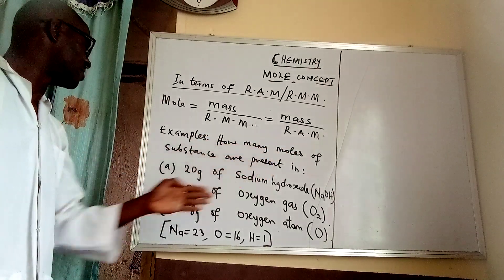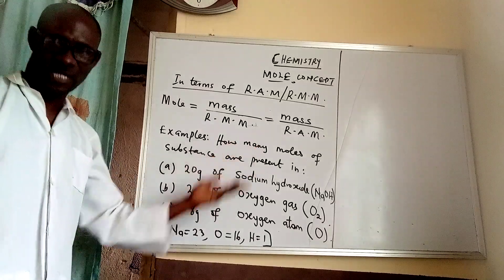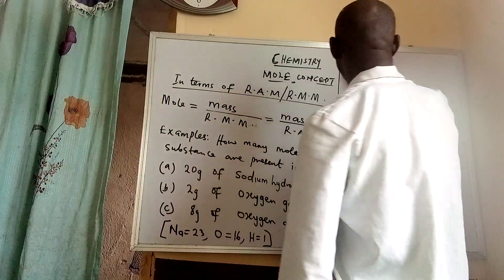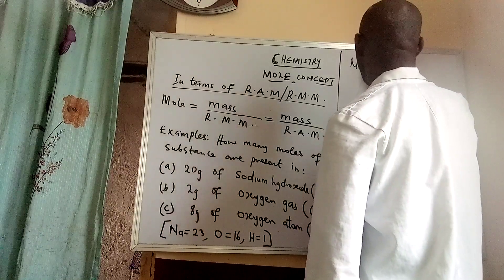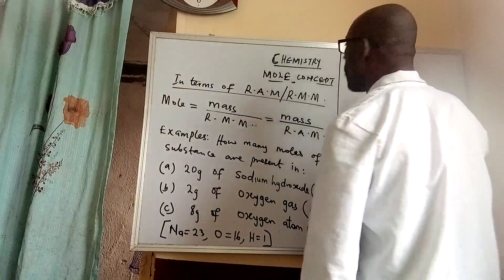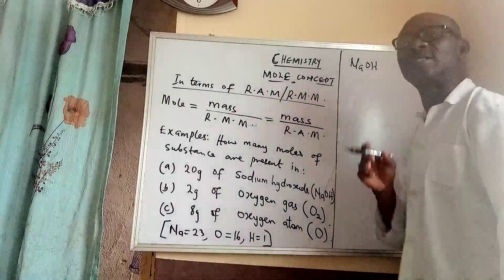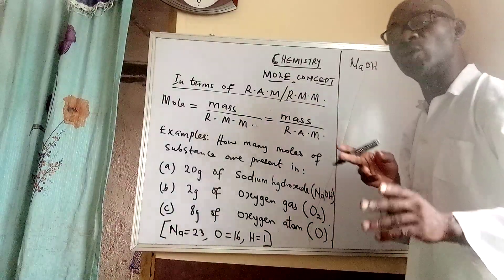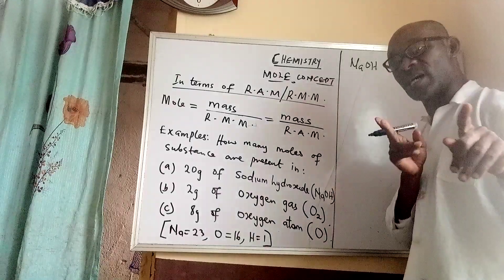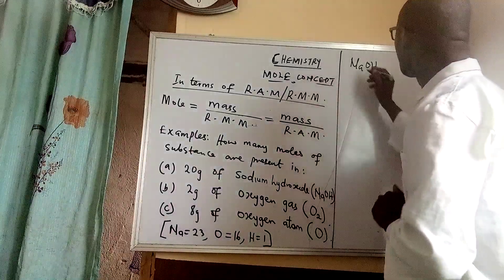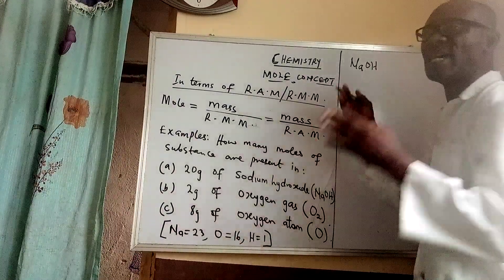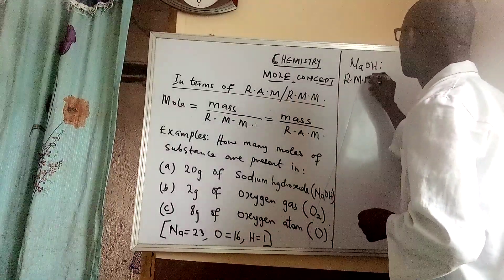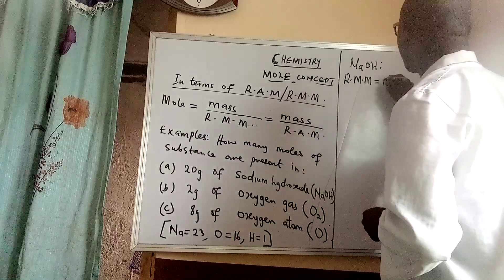The first example question: we want to find how many moles of substance are present in 20 grams of sodium hydroxide. Sodium hydroxide is a compound, therefore we have to find the relative molecular mass. Take note — relative molecular mass is used for compounds.